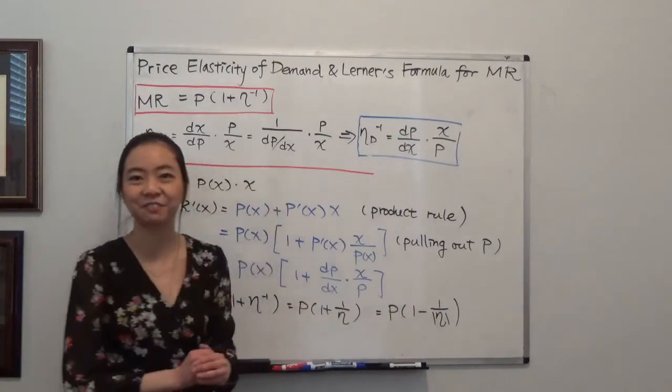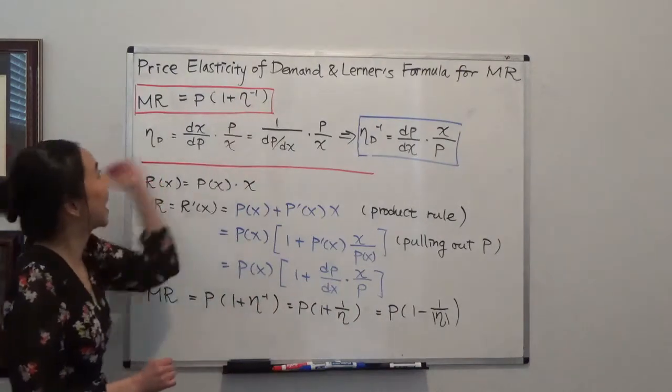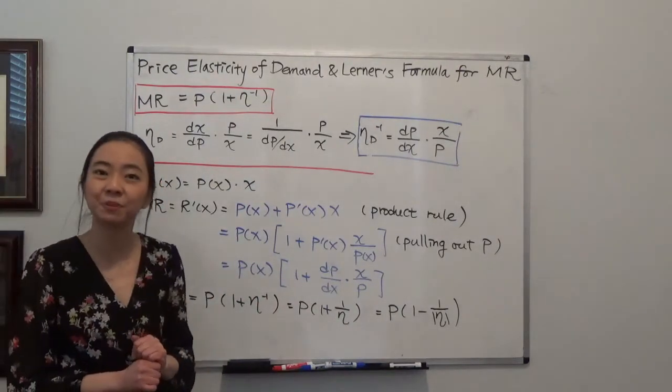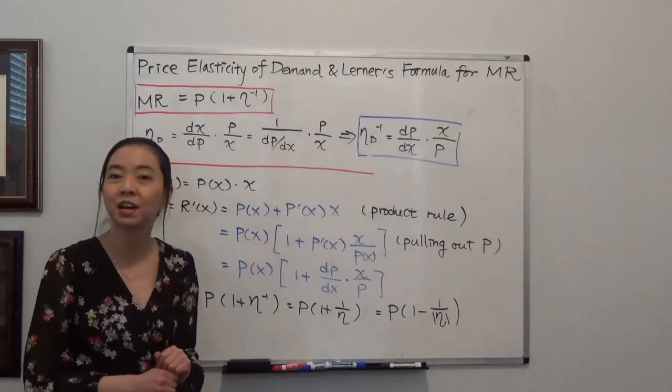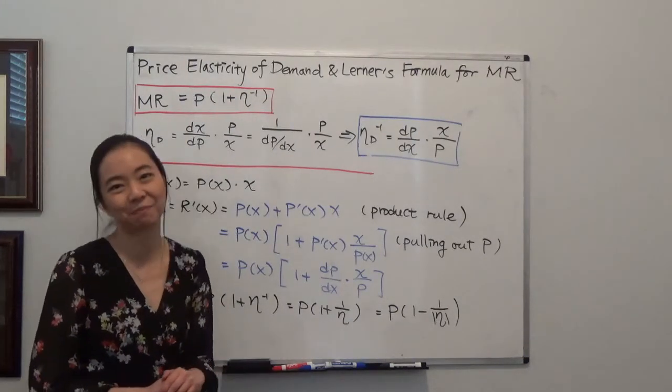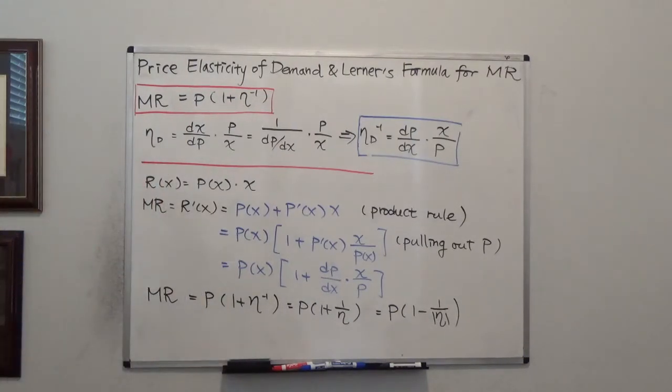Remember your eta is a negative number. So that is our price elasticity of demand and Lerner's formula for marginal revenue. I hope this helps. And I'll see you next time.